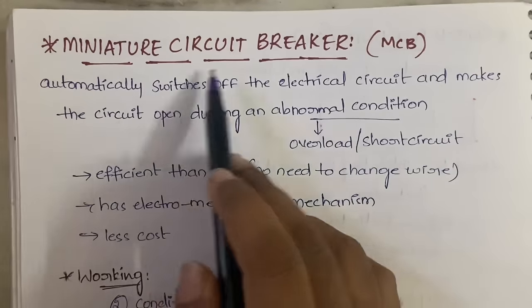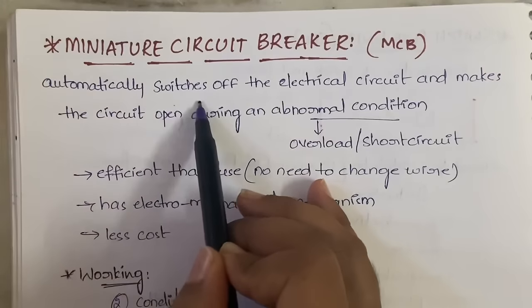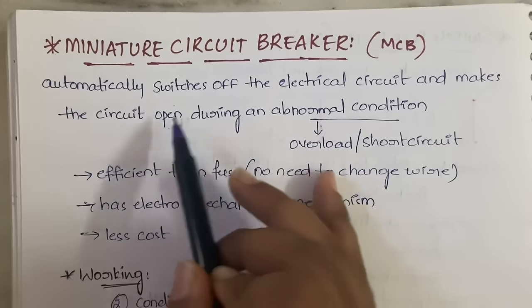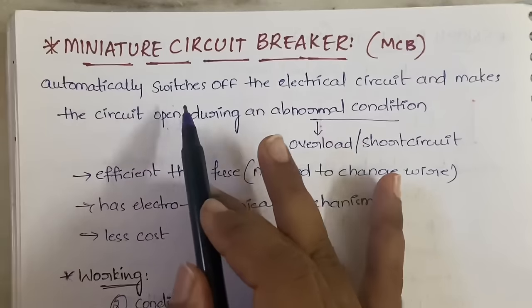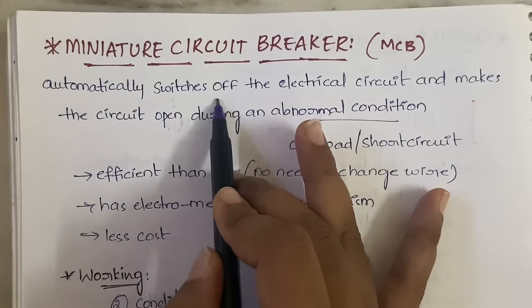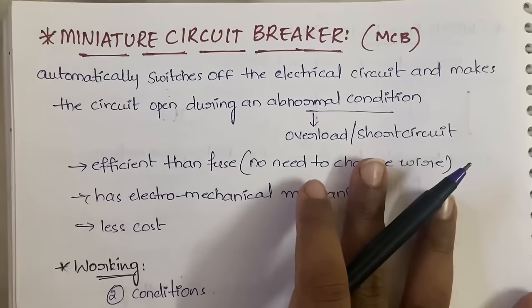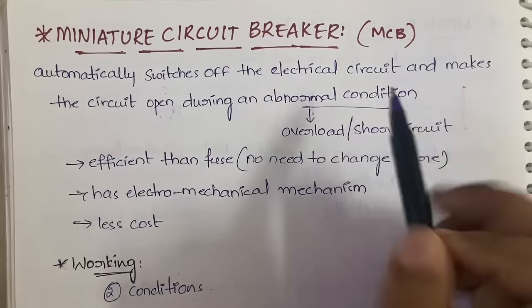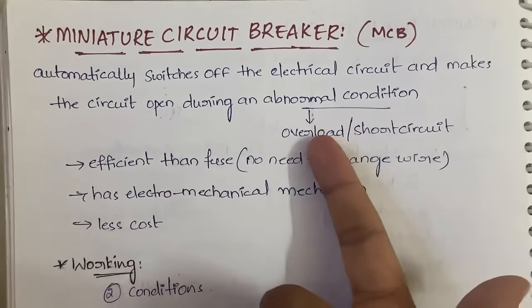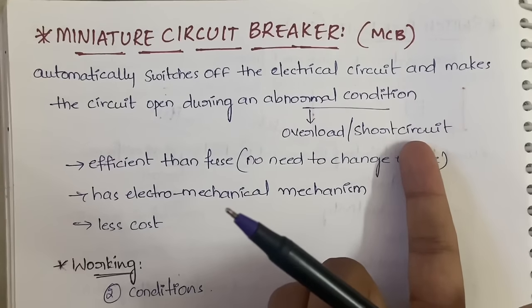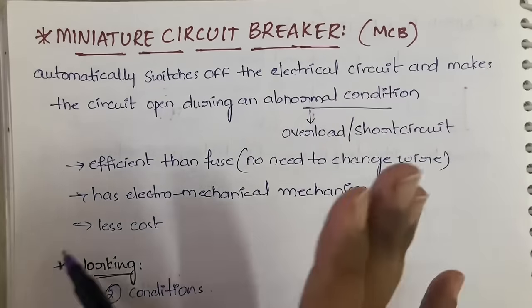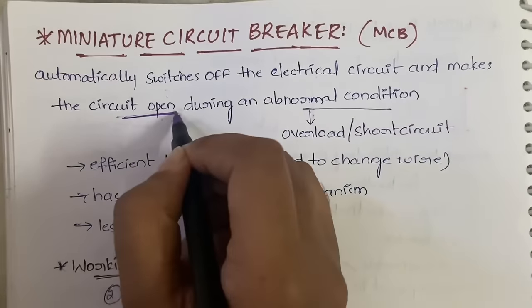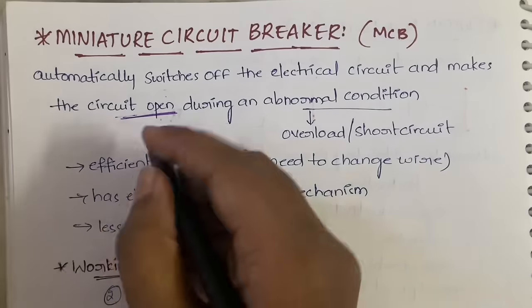First, what is MCB? It is a device which will automatically switch off the electrical circuit and make the circuit open during an abnormal condition. We need not go and turn it off manually — it will automatically switch off. When will it switch off? During an abnormal condition, which can be an overload condition or a short circuit condition. In either case the MCB will act and make the circuit open, so there will be no current.